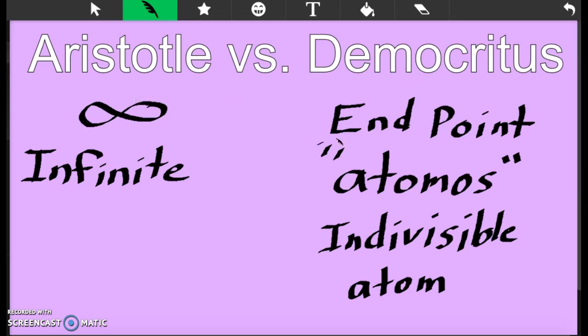In a way, both of them were right. Democritus was right that when we divide matter down to the atom level, it still retains properties of that element. I can take a piece of copper and chop it down until I hit that atom point, and the physical and chemical properties of that copper atom are the exact same as that original chunk of copper.